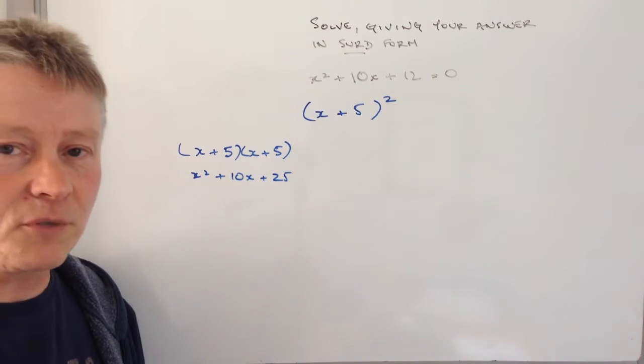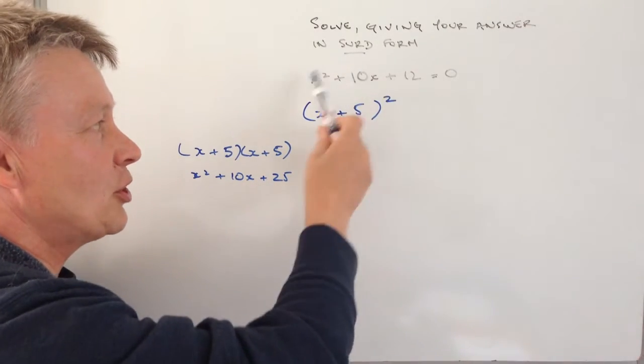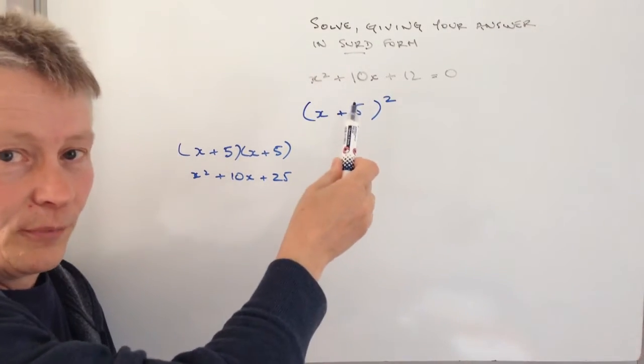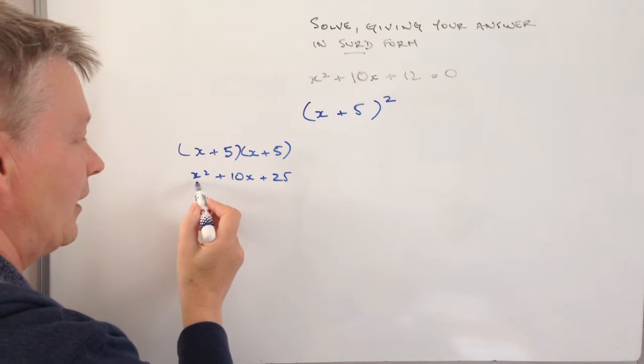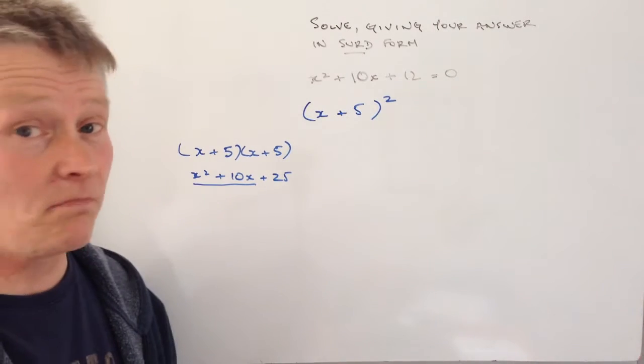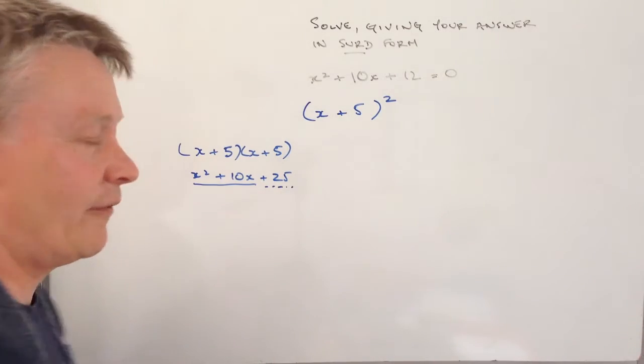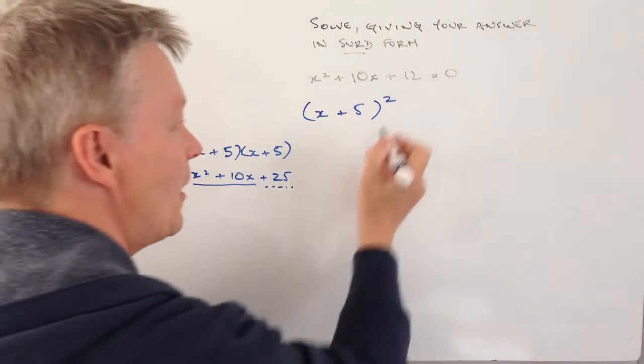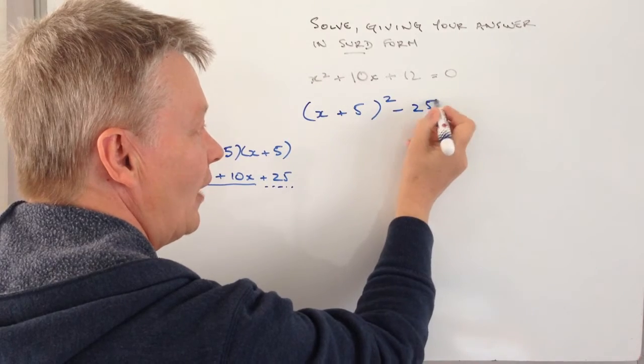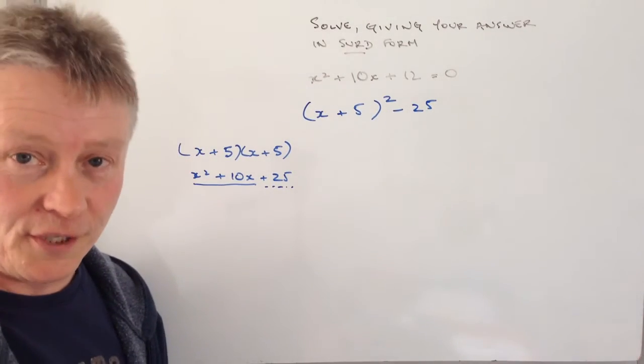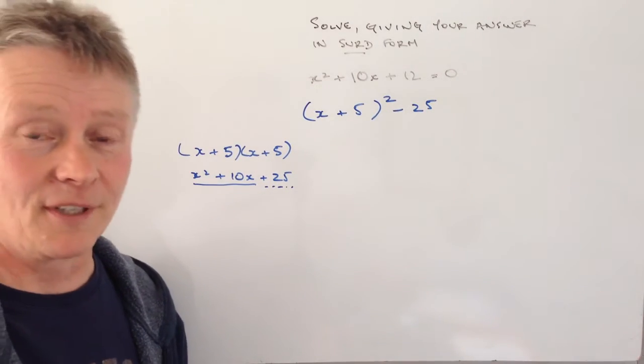If I'm changing the form of this formula, I'm okay at the beginning. I've got x squared plus 10x, absolutely fine. The difficulty is this plus 25, so I have to minus 25, and then the first bit of the formula is the same.